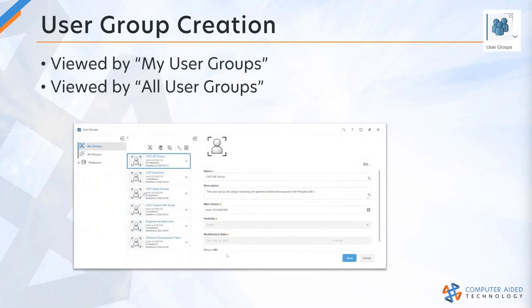When you go into the user groups, this is the screen you're going to see. I'm going to roll through these quickly because I have my tenant up in the background and we'll create a couple of user groups live. If you click on that icon, you can see my user groups are either 'my groups' or 'all user groups.' My groups are the groups that I have ownership of, and all groups are everything I can see inside the platform. You can also filter these and pull them down depending on what you're looking for.